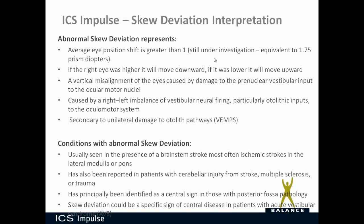The term otolith should be familiar because this is also what VEMP tests for, and in the research you'll often see skew deviation done alongside VEMP testing. Abnormal skew deviation is usually seen in the presence of a brainstem stroke, most often ischemic strokes in the lateral medulla or pons. It has also been reported in patients with cerebellar injury from stroke, multiple sclerosis, or trauma. It is principally identified as a central sign in those with posterior fossa pathology, and could be a specific sign of central disease in patients with acute vestibular syndrome (AVS).